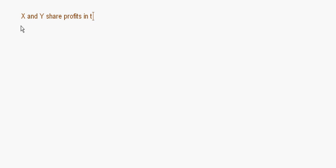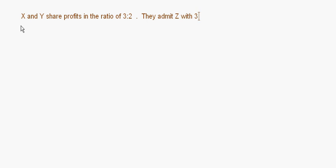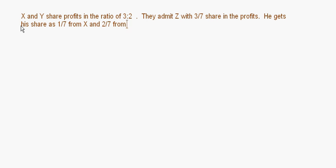Now let's take up one more question of a different type. X and Y share profits in the ratio of 3:2. They admit Z with 3/7 share in the profits. He gets his share as 1/7 from X and 2/7 from Y. Let's calculate the new ratio.